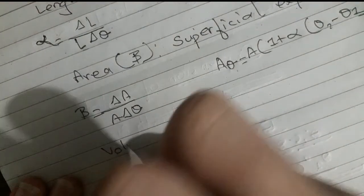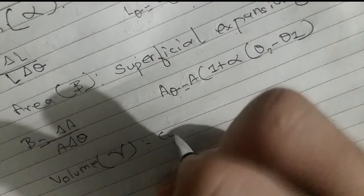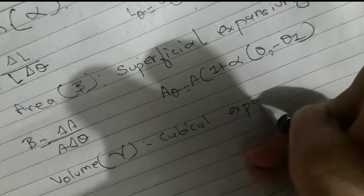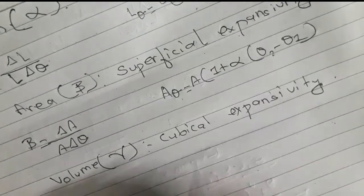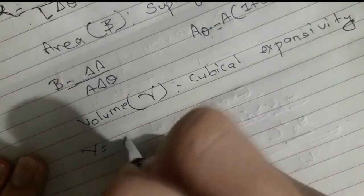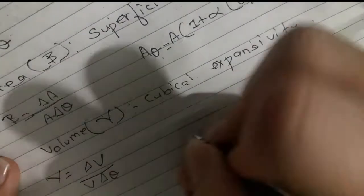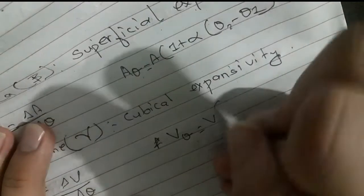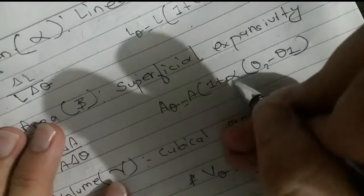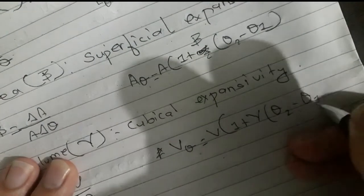When length, breadth, and height all change, we use volume. The coefficient is called cubical expansivity, denoted gamma. Gamma equals change in volume divided by original volume divided by change in temperature. So: V-theta = V(1 + gamma·(theta 2 minus theta 1)).